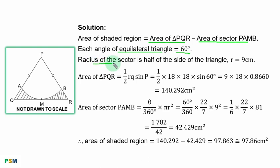Radius of the sector is half of the side of the triangle, that is 18 cm divided by 2, so radius is equal to 9 cm.